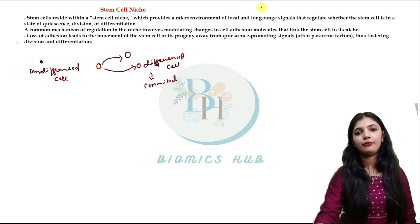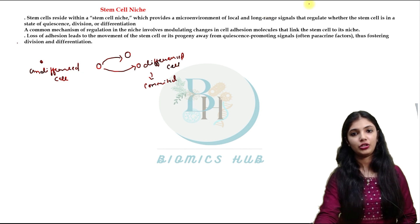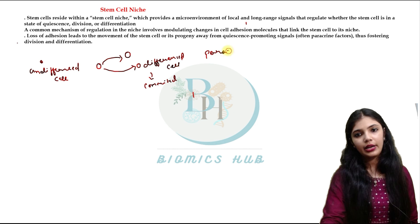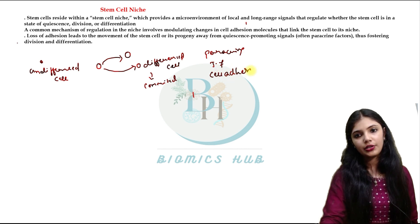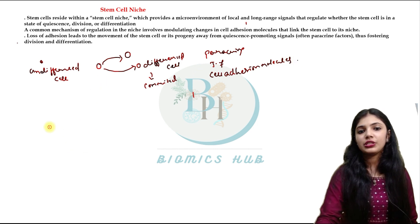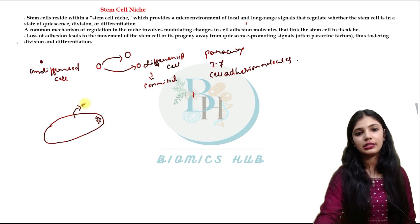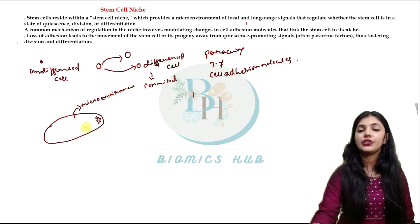The decision of whether it will form a stem cell or go into differentiation is regulated by some paracrine factors, juxtacrine factors, as well as some cell adhesion molecules. The place where the stem cell stays is known as the stem cell niche, and the stem cell niche provides a micro-environment to the factors which regulate the stem cell.